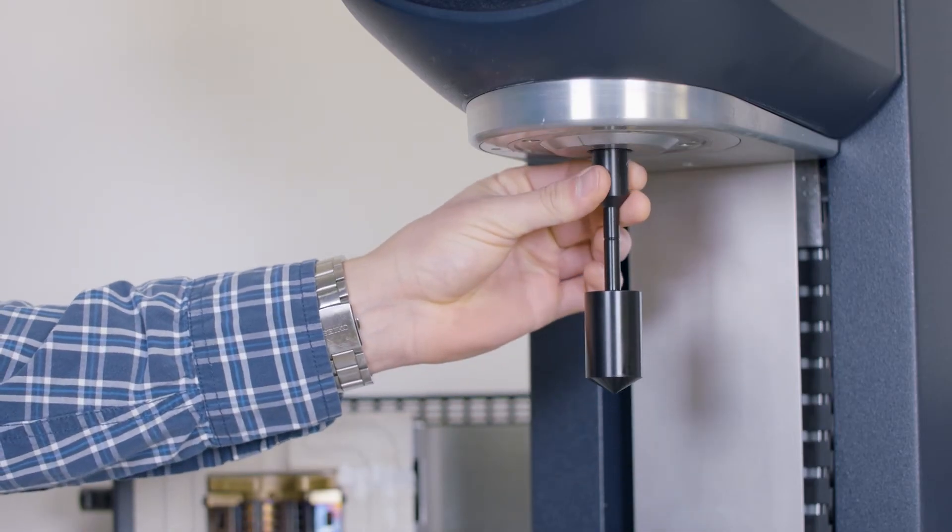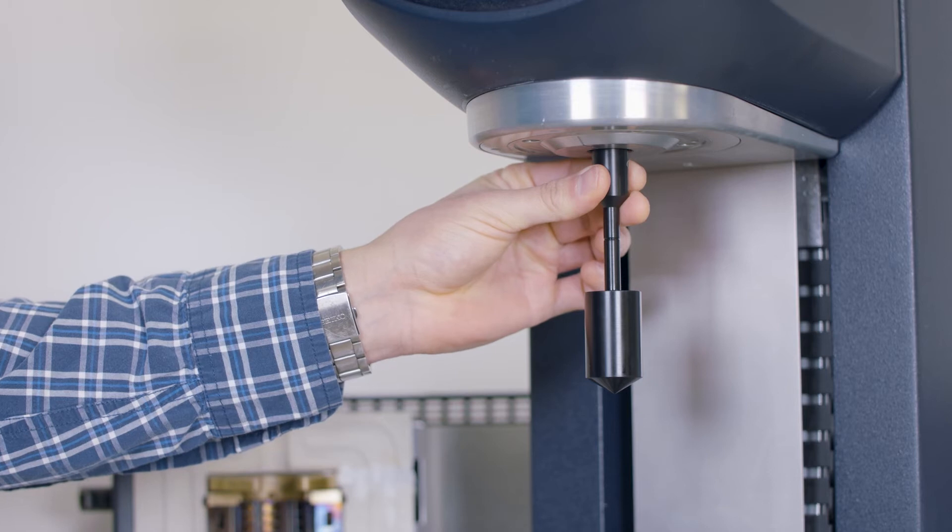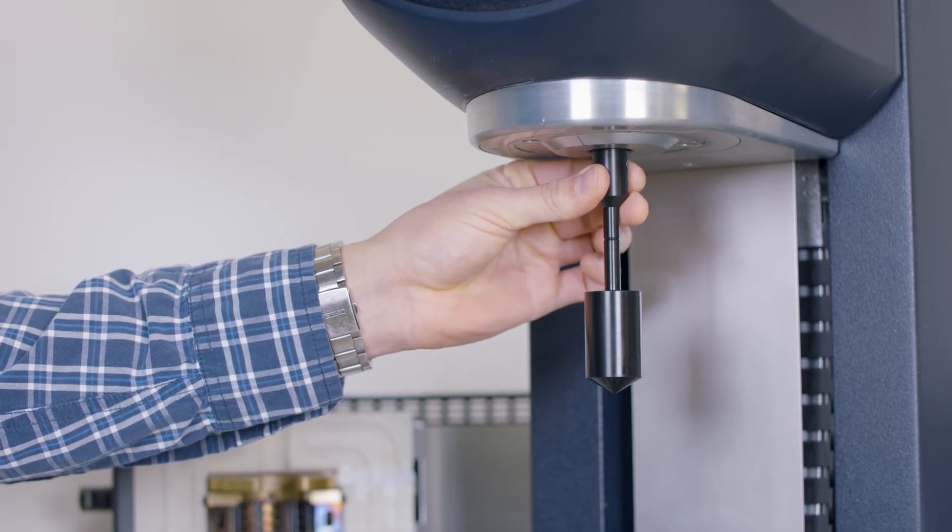Install the upper fixture rotor onto the draw rod by holding the rotor secure and tightening the draw rod.